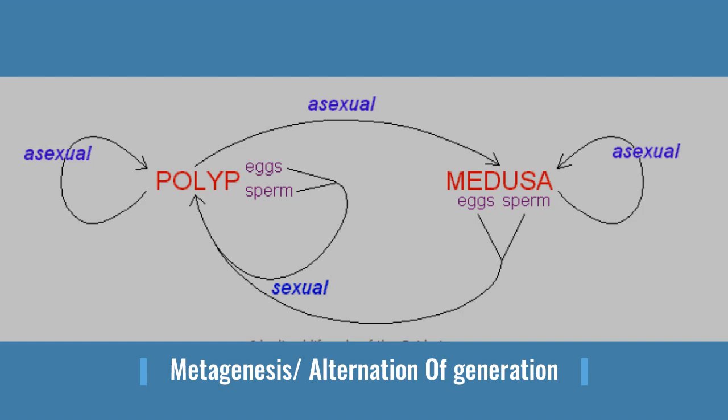In metagenesis, polyp produces medusa asexually. Asexually means one organism produces offspring on its own, while sexually means two partners are involved — so don't confuse asexual and sexual reproduction. Medusa reproduces sexually to produce polyp again. The special Cnidarians that show metagenesis are Aurelia and Obelia. Hydra does not show metagenesis.